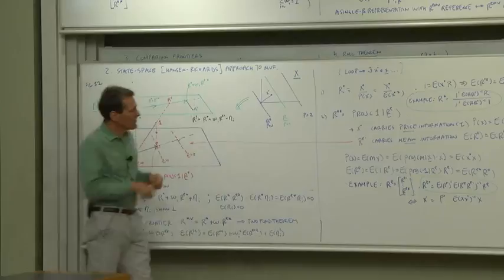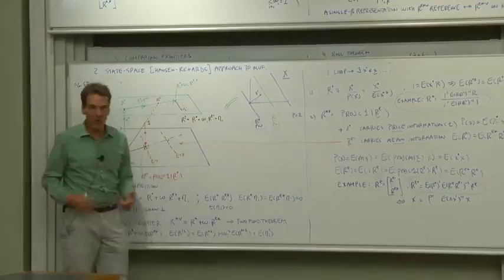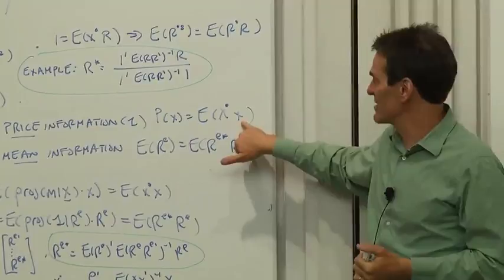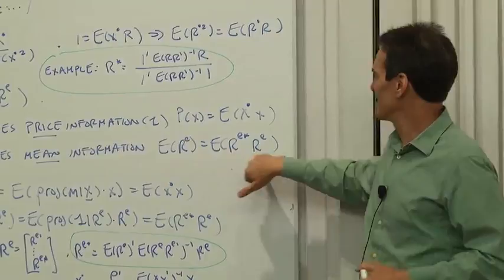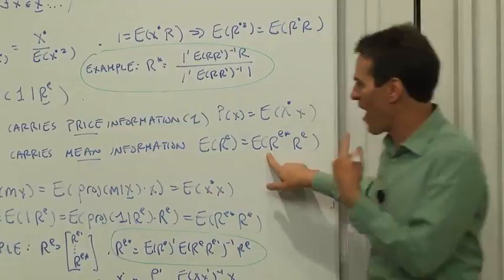Now why would anybody want to do that? We're looking for a mean variance frontier. So we're looking for some way of changing means. r e star carries the information about means in the same way that r star and x star carry information about prices. It's the same idea, just applied to means rather than prices.